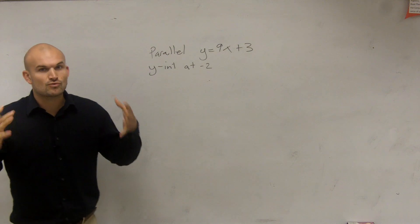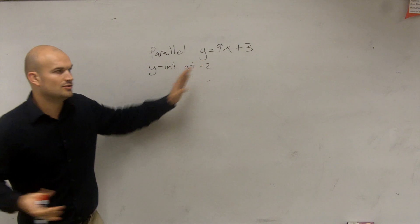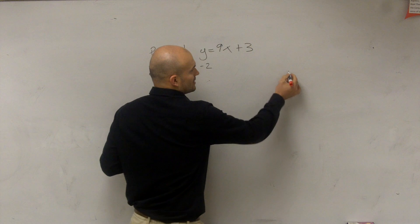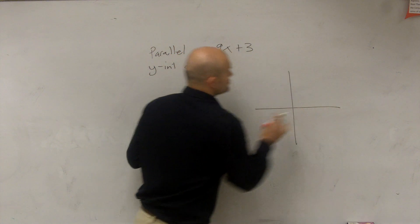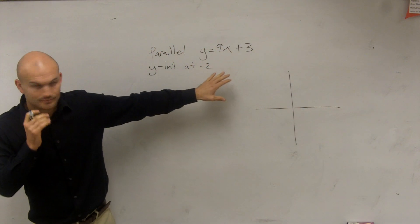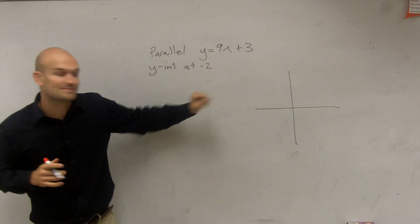Well, what it's asking us to do is write a new equation of a line. So you don't need to know what this line looks like. But what you do need to know for this is you need to know exactly what the y-intercept is.